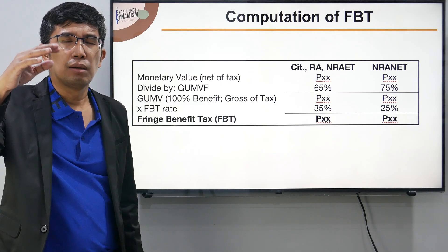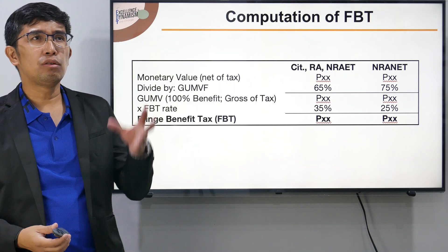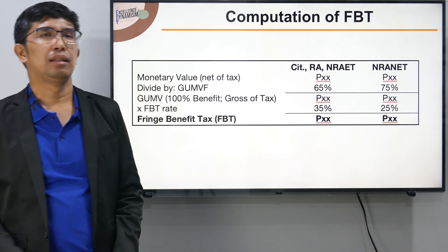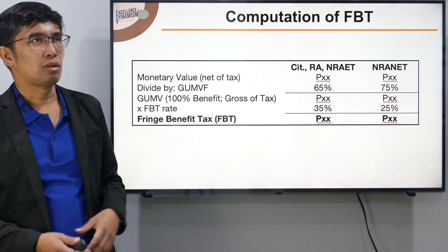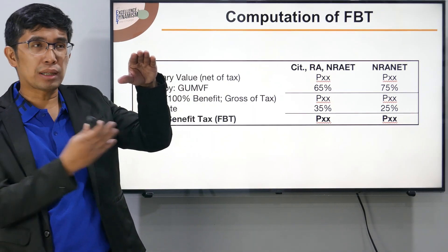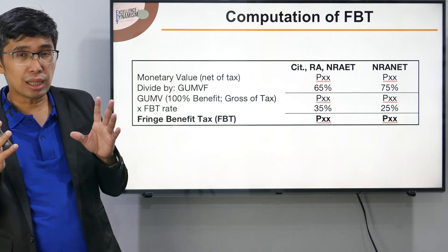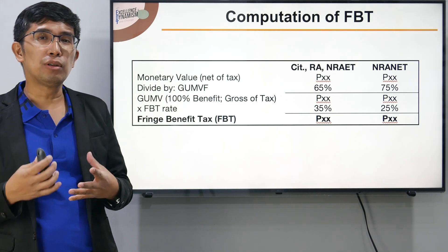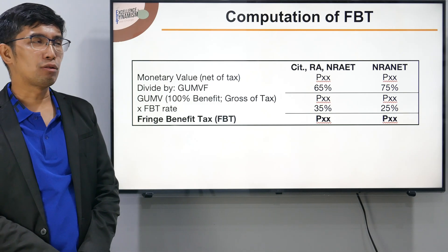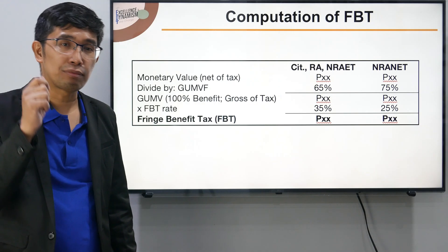To summarize how to compute FBT: start with the monetary value — that is the net amount received by the employee after tax. Divide the monetary value by 65% to get the gross benefit, then multiply by 35% to get the FBT. If the recipient is an NRA not engaged in trade, use 25% as the FBT rate and divide by 75% instead.